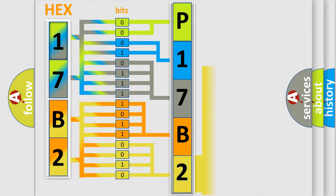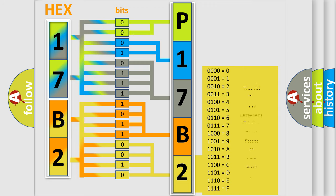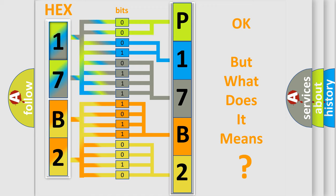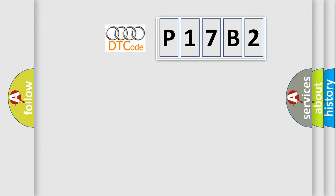A single byte conceals 256 possible combinations. We now know in what way the diagnostic tool translates the received information into a more comprehensible format. The number itself does not make sense to us if we cannot assign information about what it actually expresses.